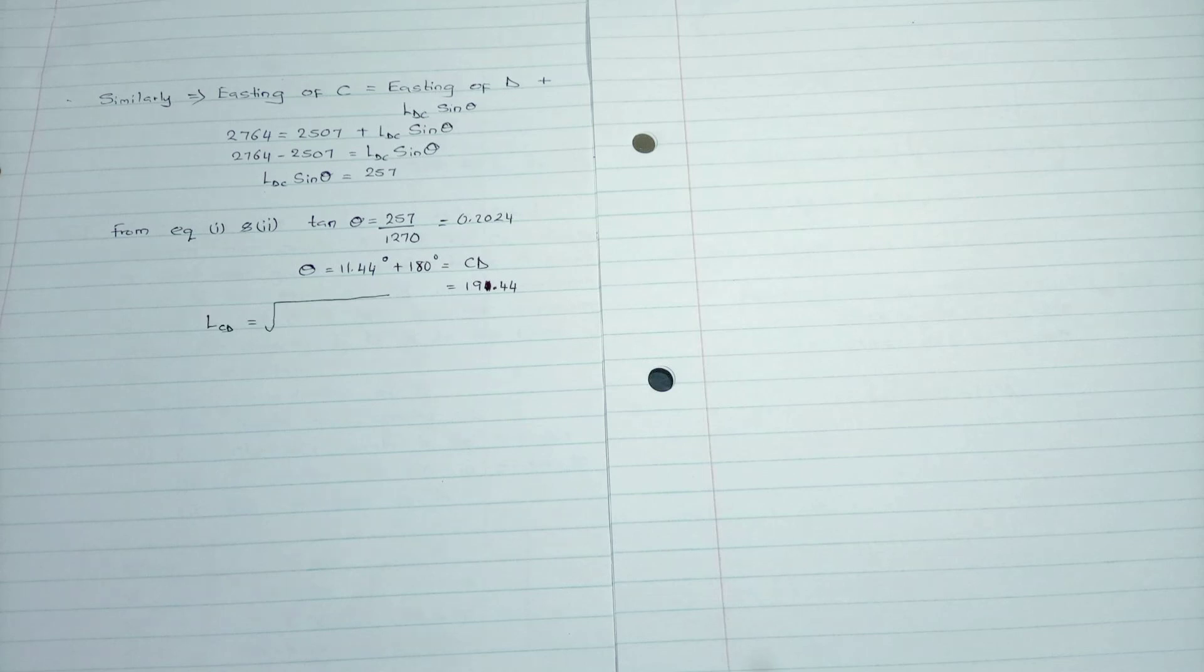By comparing both, we subtract and find that the length of CD sin theta is equivalent to 257. From equations 1 and 2, using mathematical properties, we find that tan theta equals the sin value over the cos value. Using the calculator, we find the tan inverse which is 11.44, then plus 180 to get the corrected bearing, because the difference between fore bearing and back bearing is 180 degrees.